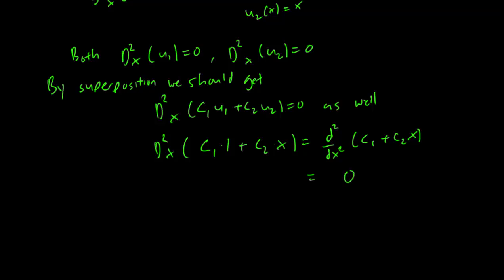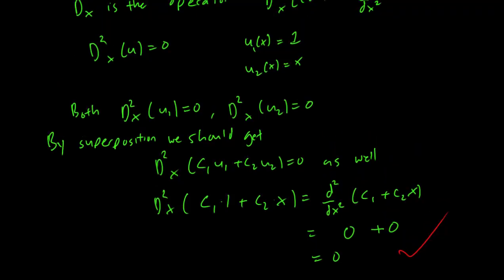So this just becomes 0 + 0 = 0, and this implies that superposition works for this case. Because we had u₁ = 1 and u₂ = x as solutions, we could see that C₁u₁ + C₂u₂ was also a solution.